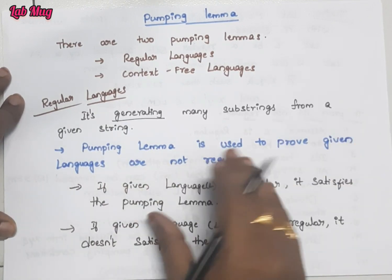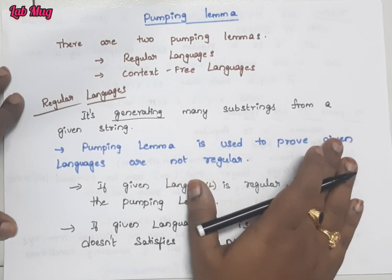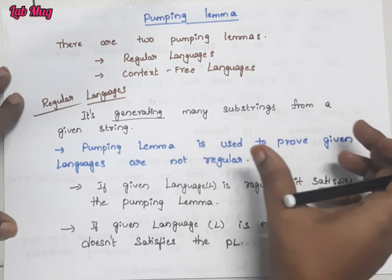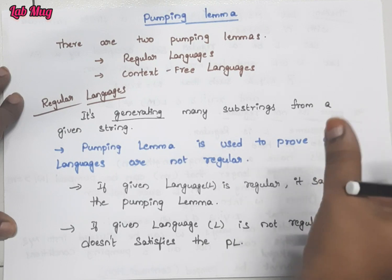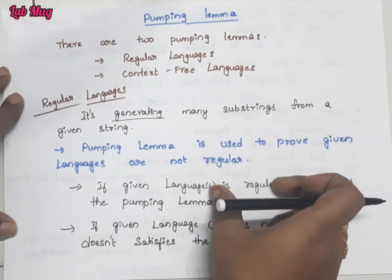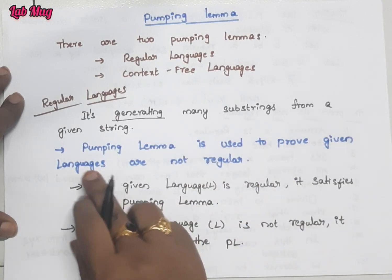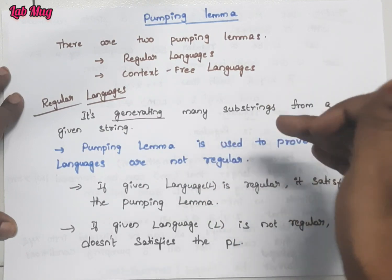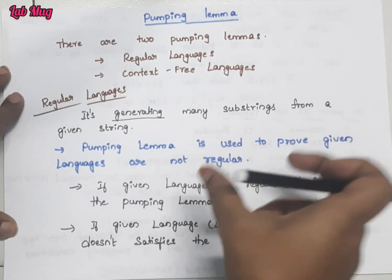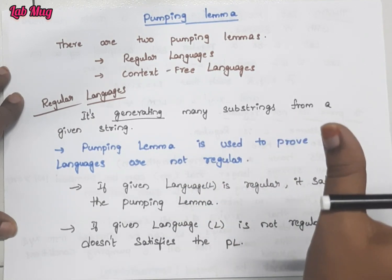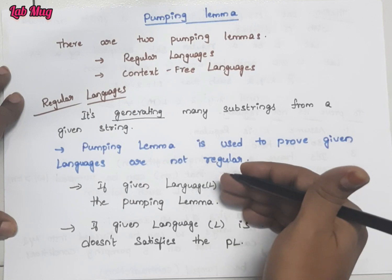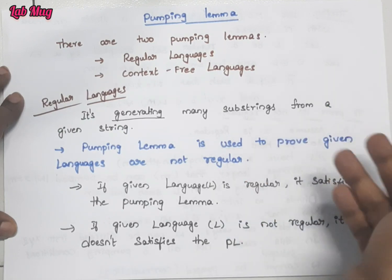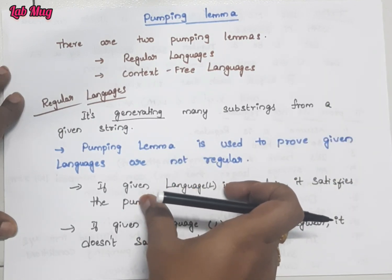Pumping lemma is used to prove a given language is regular or not regular. Previous class lo chusinatunga regular expressions ki M.M. rules tiskuntam, regular expressions lo identify chesthe state diagrams use chestham — that is regular expressions. Alante regular expressions — 'not regular' ane oka language tiskuntundi. A language ni 'not regular' ani prove cheyyadaniki use chese concept — Pumping Lemma. Dhani koosam first of all manam 'it is regular' ani chepti tiskuntam, so manam careful ga ee concept vinali because reverse lo prove cheyalanukonam.